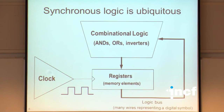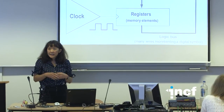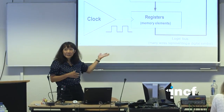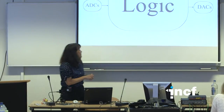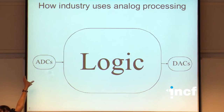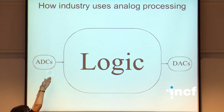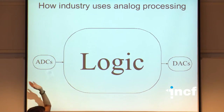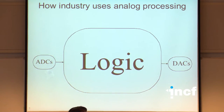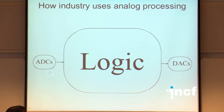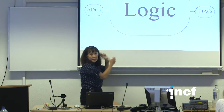What about the analog part of your world? Sounds and images are analog, not digital. What does industry do? It uses an analog-to-digital converter to immediately convert analog signals into digital, processes them through a large block of logic, then if analog output is needed — like playing back sound — it goes through a digital-to-analog converter. The analog portions of processing are extremely small compared to the digital part.